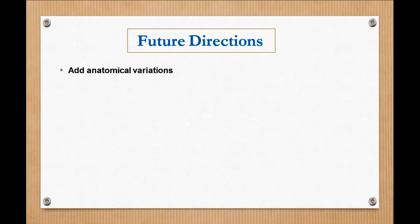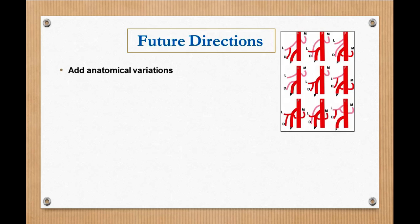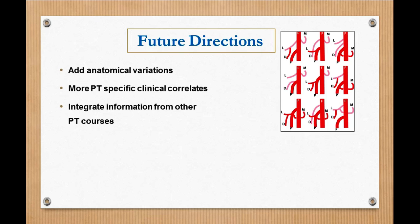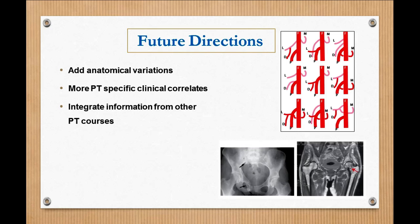Some other things I thought we could add would be some more anatomical variation, which there's usually not a lot of room for that in dissection guides. More specific clinical correlates and tie into other programs or classes that they're taking at the time. Could do video clips at the end of each lab to review all the structures you're supposed to find or for difficult steps they have to do, or create modules for difficult concepts like the adductor canal, which can be really hard for people to get their head around. So there's a lot of opportunity to add cool things here.